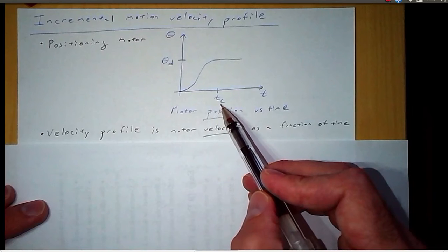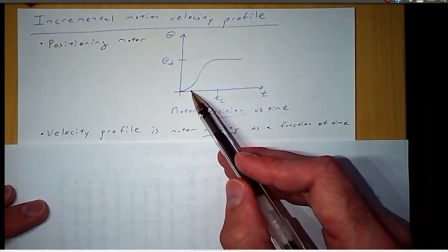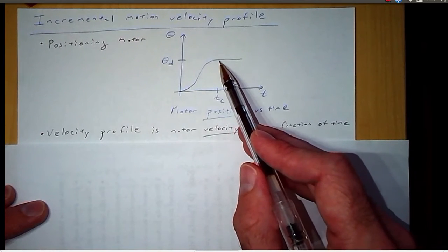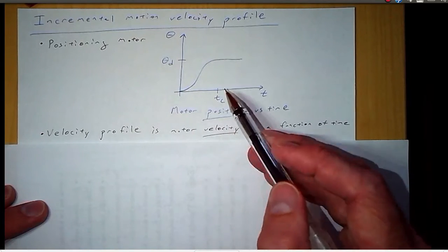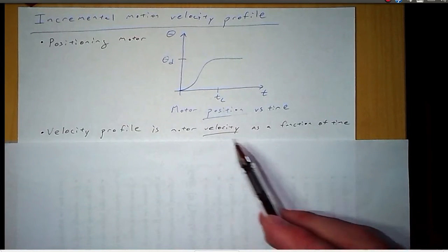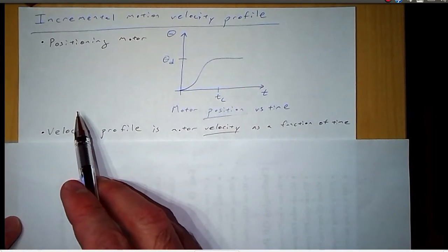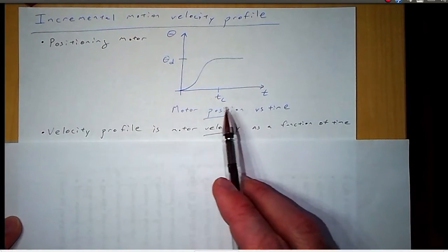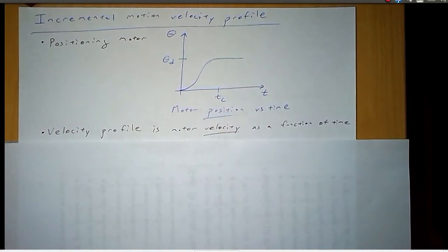What about at tc, t sub c? Again, the slope is zero at that point, and so the velocity there is zero. So we know that our velocity profile is going to start at zero and then return to zero by the time we reach tc.